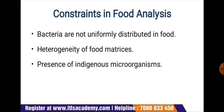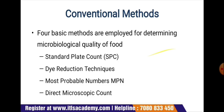Some constraints in food analysis include that bacteria are not uniformly distributed in food, heterogeneity of food matrices, and presence of indigenous microorganisms. Conventional methods for examining food for the presence, types, and number of microorganisms and their products are basic to food microbiology. However, none of the methods in common use permits the determination of exact numbers of microorganisms present in food products.